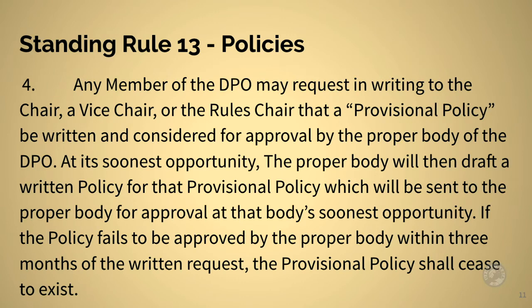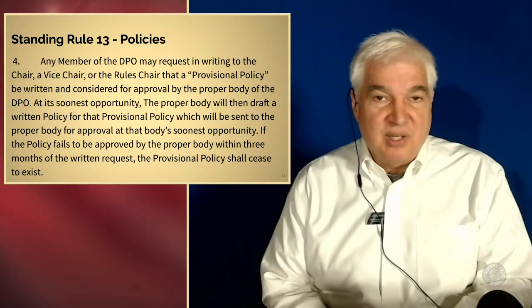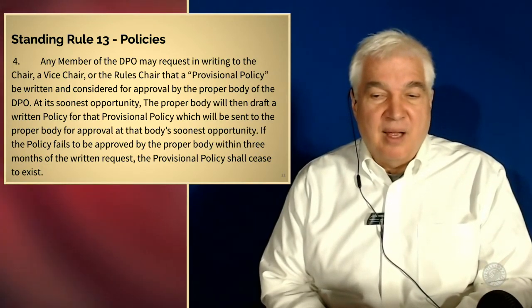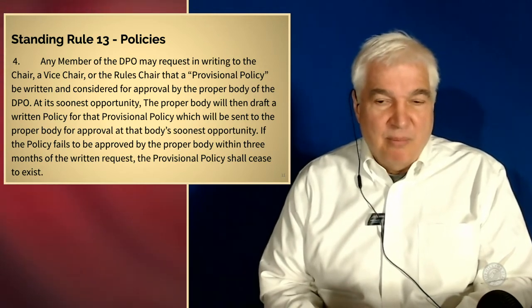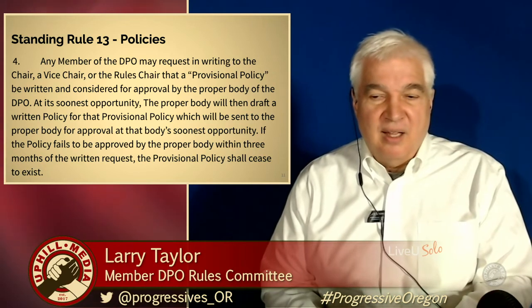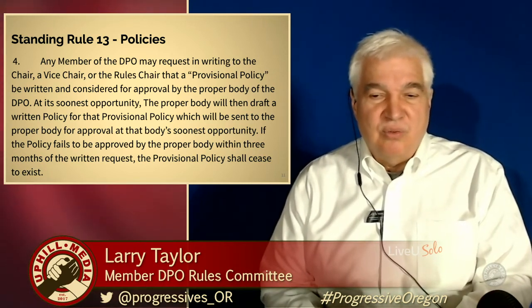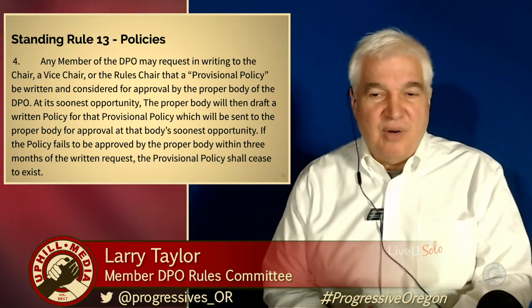Number four: any member of the DPO may request in writing to the chair, a vice chair, or the rules chair that a provisional policy be written and considered for approval by the proper body of the DPO. At its soonest opportunity, the proper body will draft a written policy for that provisional policy, which will be sent to the proper body for approval at its soonest opportunity. If the policy fails to be approved within three months of the written request, the provisional policy shall cease to exist. This is language to protect people in the Democratic Party of Oregon from having no ability to drive resolution on rules created in the background.